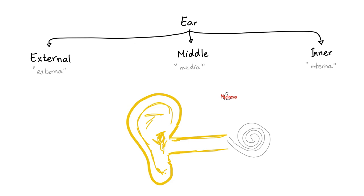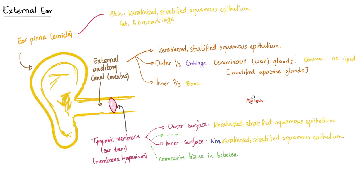A quick review on the anatomy of the ear. Your ear is made of three parts: external ear, middle ear, and internal ear. Otitis externa is inflammation of the external ear. Otitis media is inflammation of the middle ear. Otitis interna will be the inner ear.